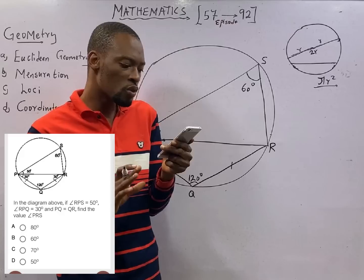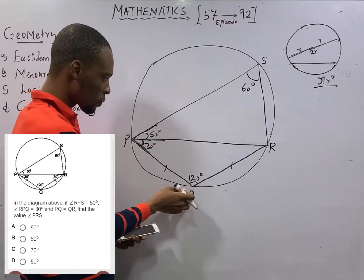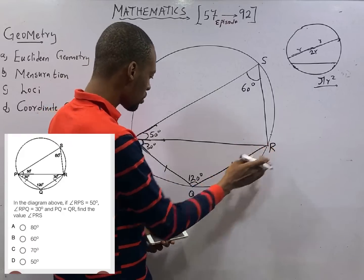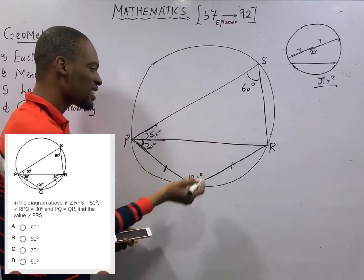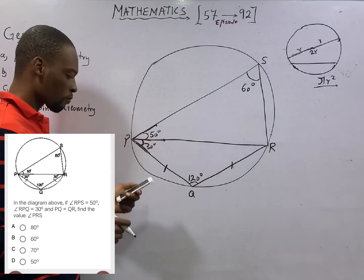And PQ equals QR. Here is PQ. This is PQ. This is QR. So, this side, okay, it's already indicated like this. This side and this side are equal.